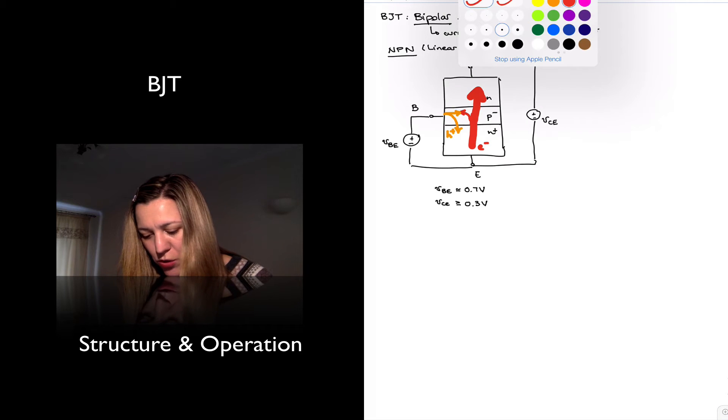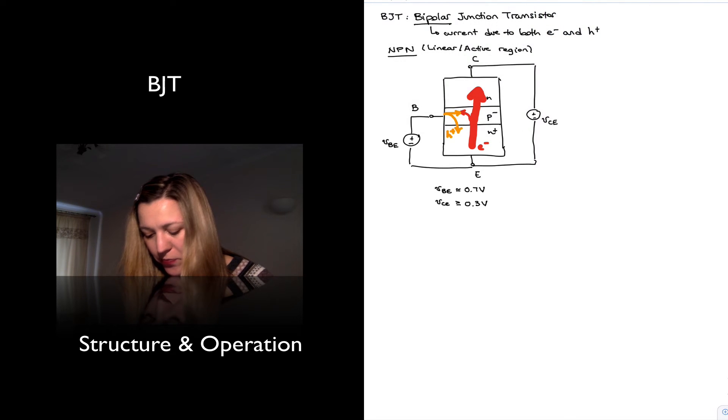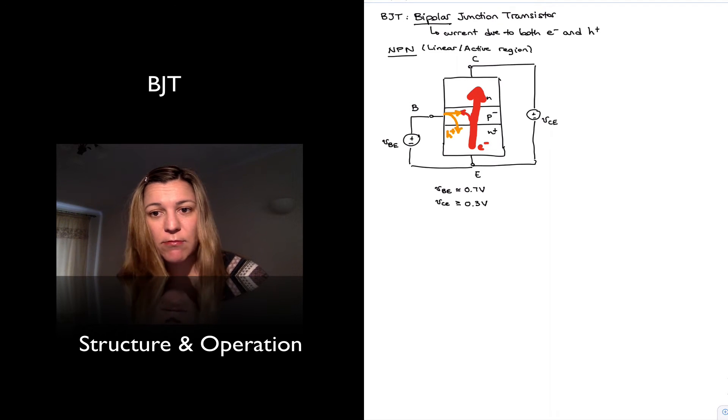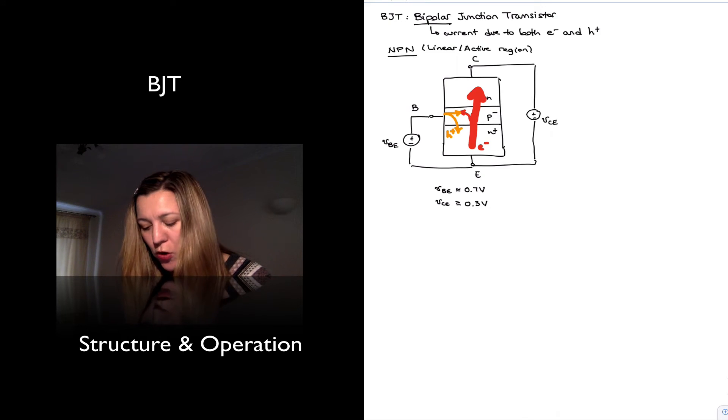And so this is more or less what's going on in that NPN transistor, in summary. Again, electrons get emitted from the emitter, if you will, into the base. There's nothing interesting there. It's just a forward bias PN junction, so the electrons flow.